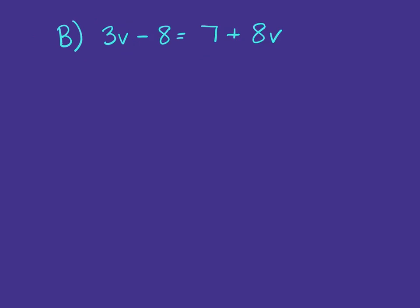Part B: 3V minus 8 equals 7 plus 8V. We've got a term that has a variable on both sides of the equation. So it won't matter on this problem whether we move it to the left or the right side.